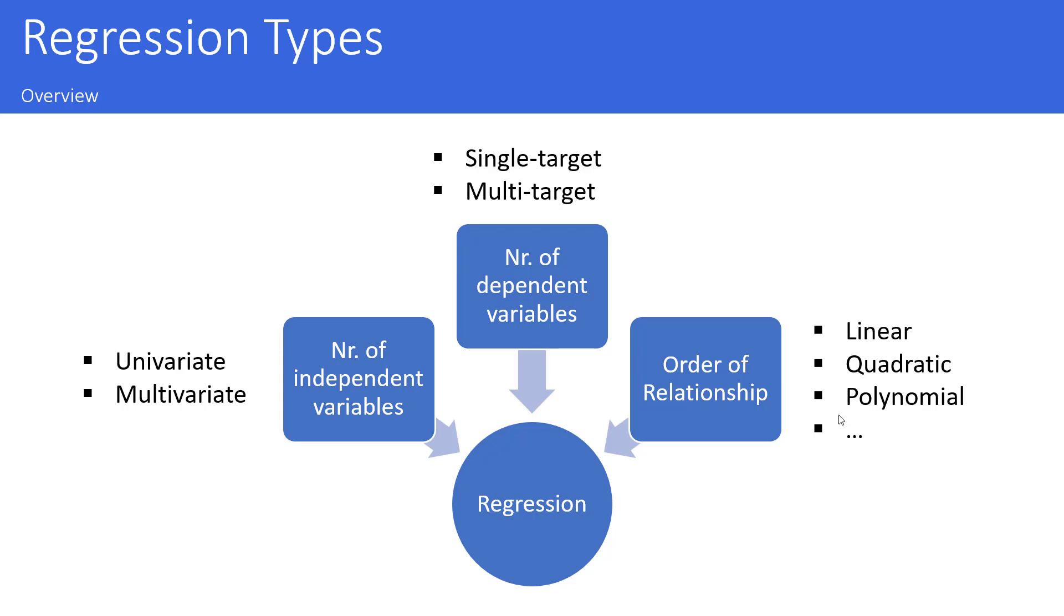The first important parameter is the number of independent variables. If you only have one independent variable, this is called univariate regression. If you have many different independent variables, this is called multivariate regression.